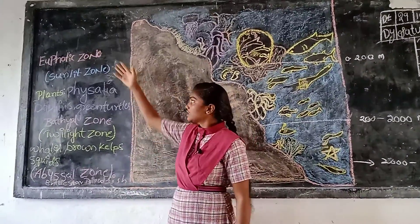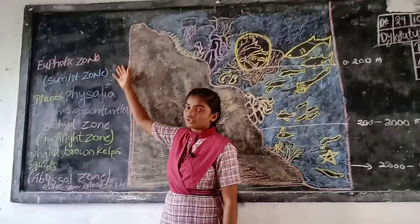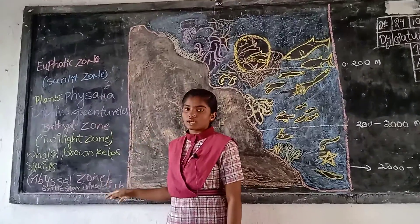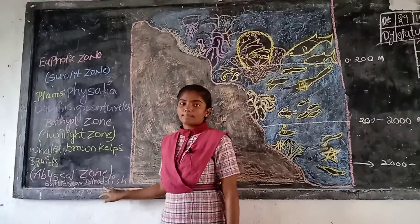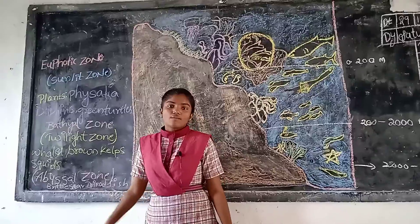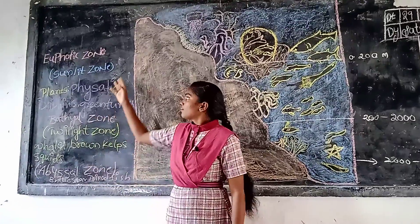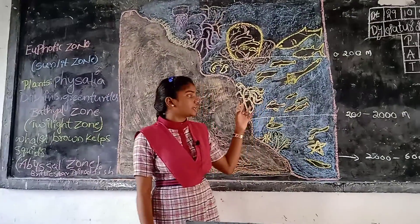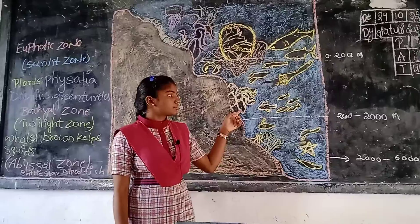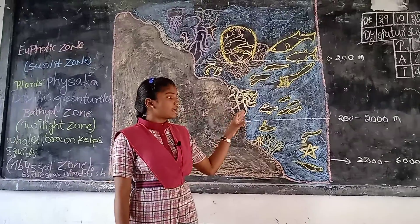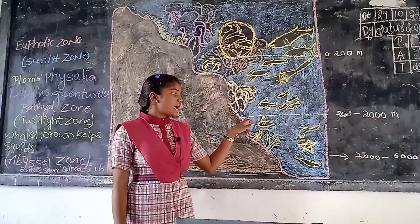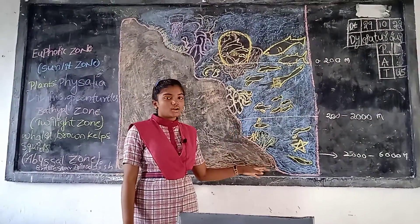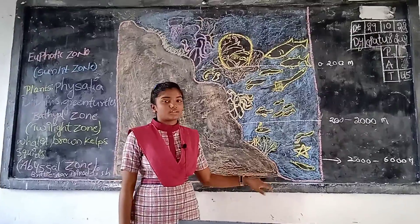The first zone is the euphotic zone, the second zone is the bathyal zone, and the third zone is the abyssal zone. The euphotic zone spans 0 to 200 meters, the bathyal zone spans 200 to 2000 meters, and the abyssal zone spans 2000 to 6000 meters.